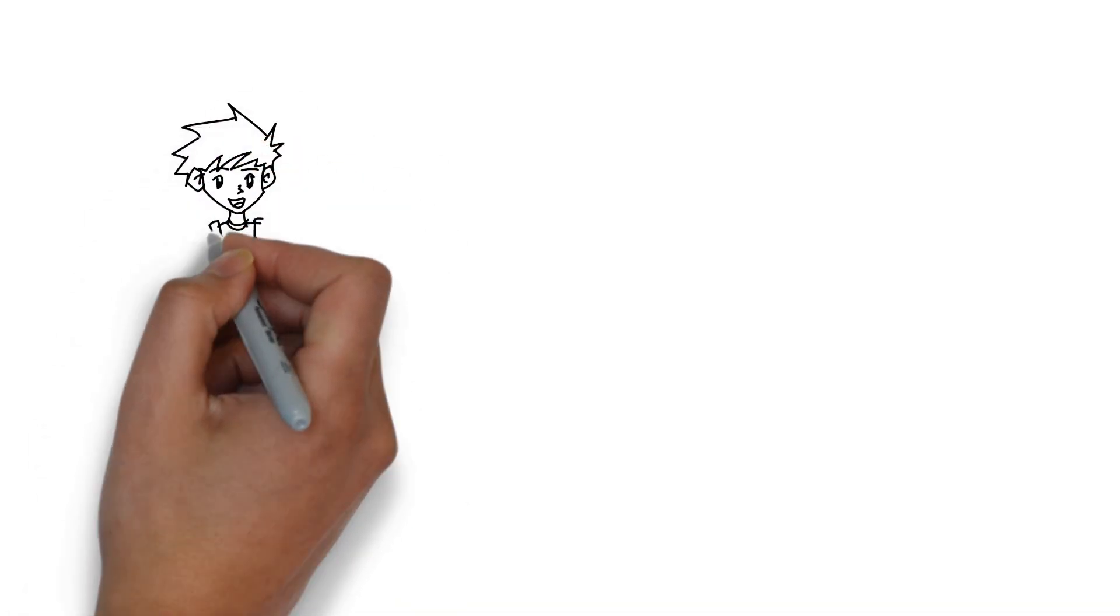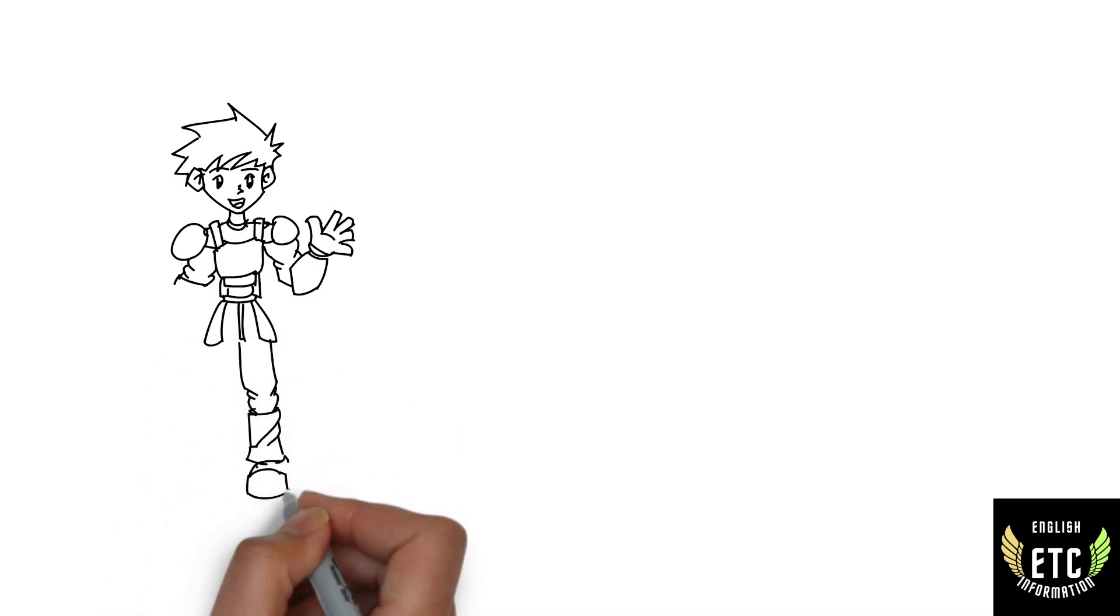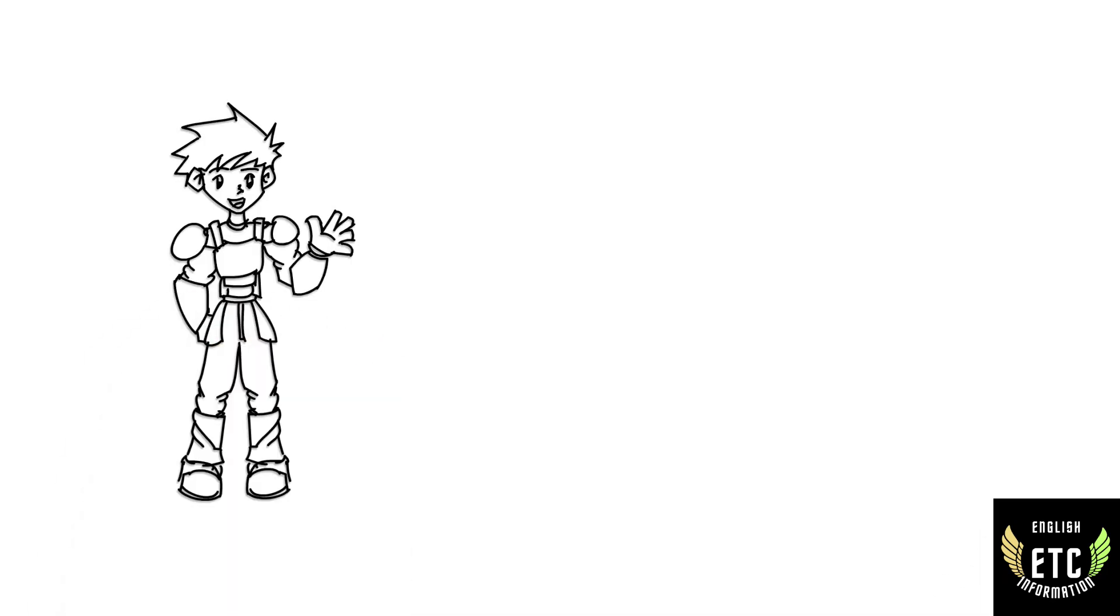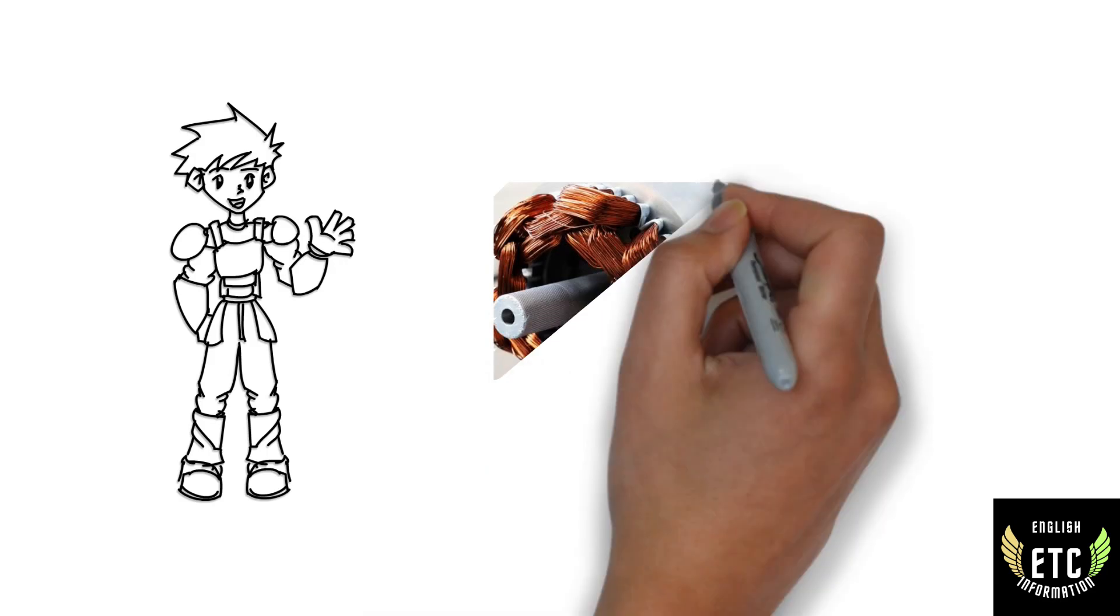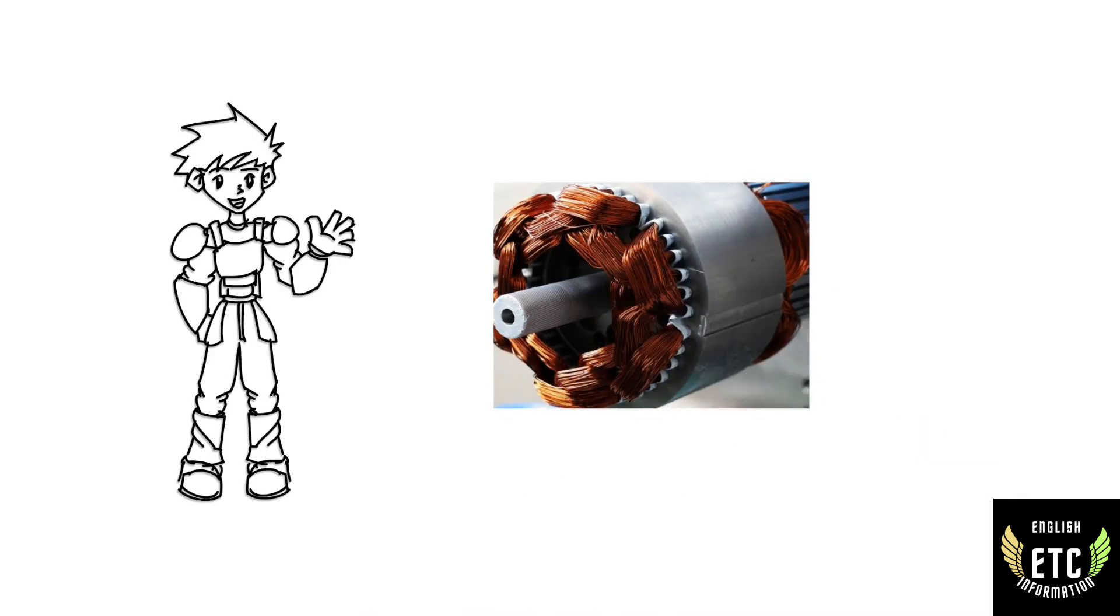Welcome back to our ATC Information English Channel. Today we are going to see information about AC motor. An AC motor is an electric motor that operates using an alternating current power source.